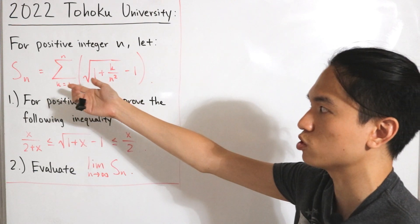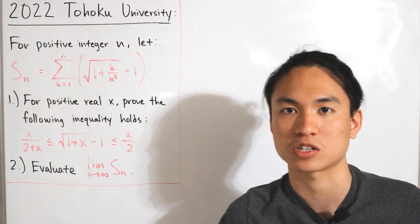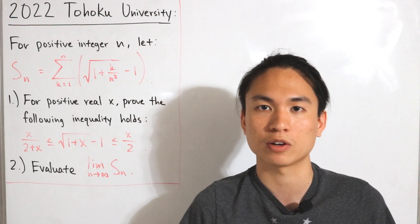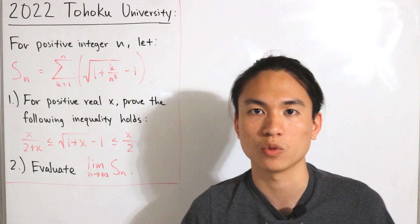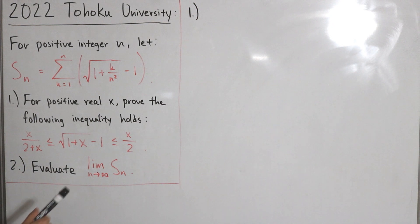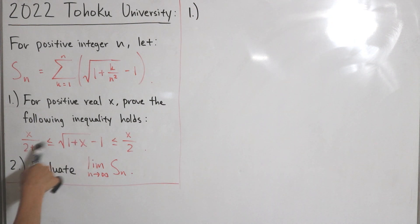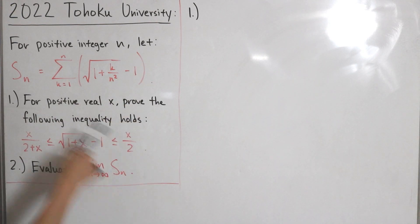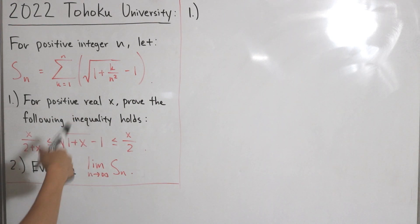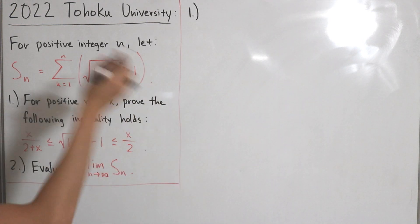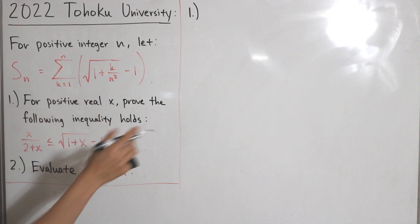At first glance it may seem unclear why we're asked about an inequality when we're given a sum, but it proves very useful in the second question. For the first side of the inequality, the first step is to add one to both sides and then square. We have to consider signs, but since x is a positive real number, all sides of the inequality are strictly positive for x > 0.